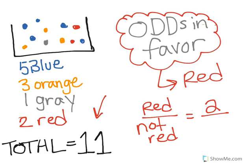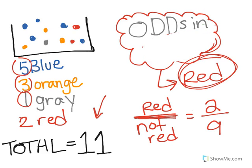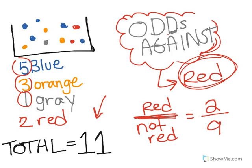We know there are two red. Then however many are not red goes on the bottom. You can use the total and subtract: 11 minus 2 gives you 9 that are not red. Or the long way: 1 plus 3 plus 5 also gives you 9. So the odds in favor of picking a red marble are 2 to 9.